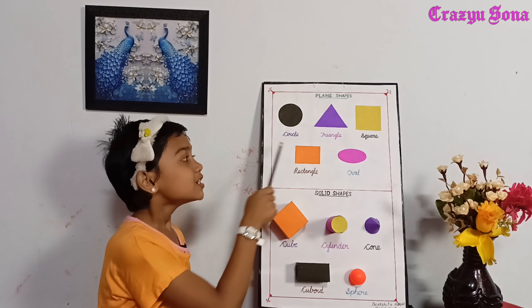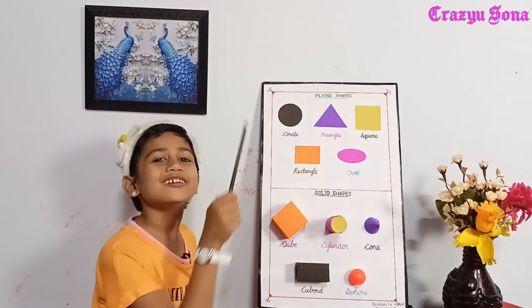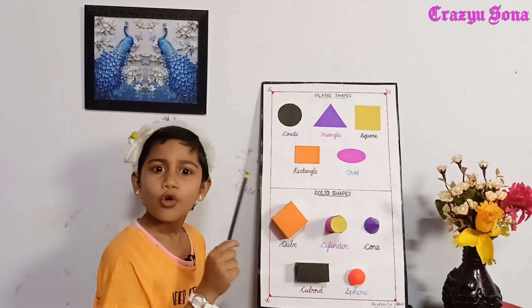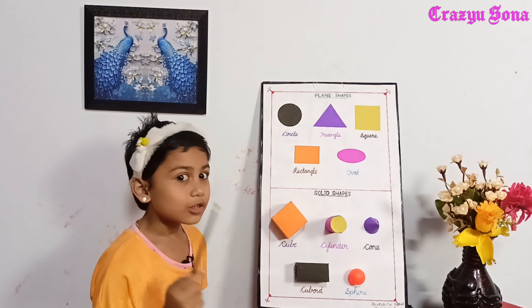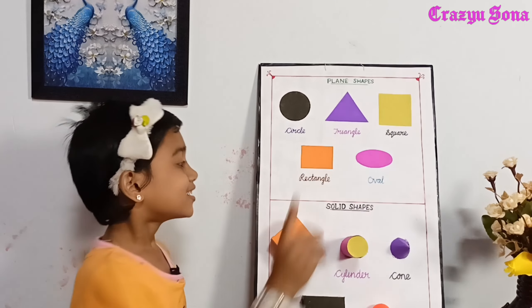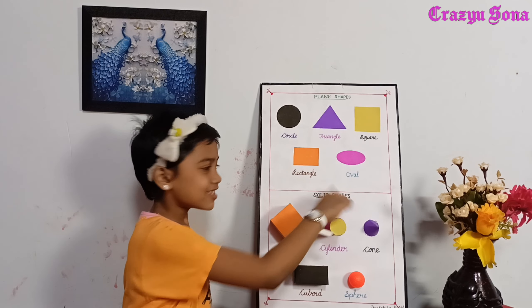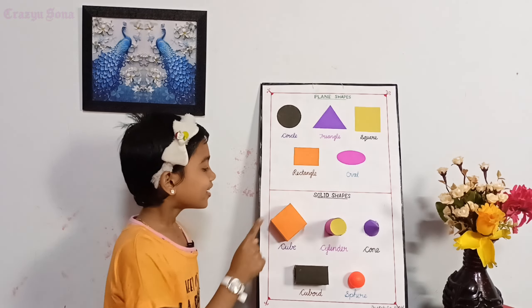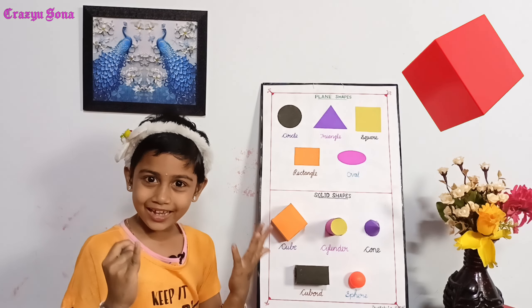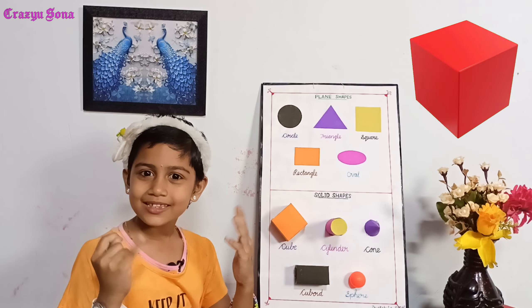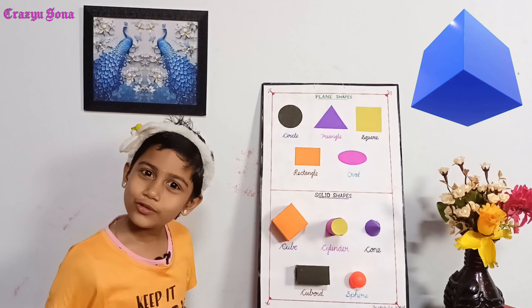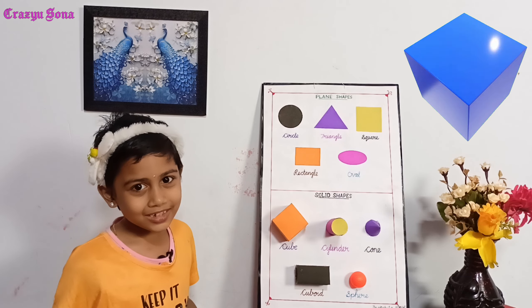Oval — oval has no sides and no corners. Solid shapes: Cube — cube has six faces, eight corners, and twelve edges.